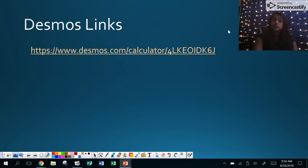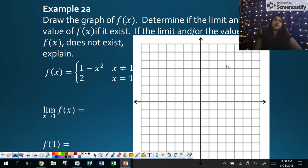If you'd like to follow along with some Desmos links, I am going to showcase these graphs. There's two graphs right here you can follow along with. That addition right there says 4 L K E O I D K 6 J. So if you choose to follow along you can. Of course you can always pause and read that title out for yourself.